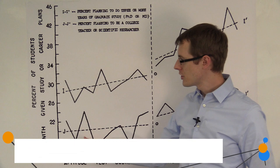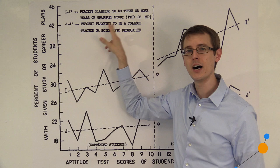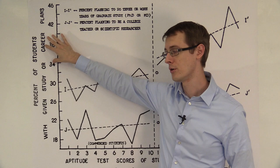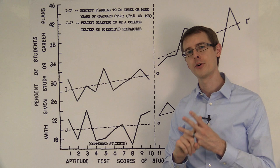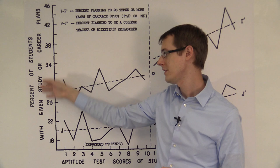So on the vertical axis, we have the percentage of students who either plan to go on to graduate study, that is these two lines up here, or who are planning to be a college teacher or a scientific researcher, that's these two lines down here. So remember, we've always got three variables for an RDD analysis: our running variable, our treatment variable whether you've got a certificate of merit or not, and then our outcome variable that's on this vertical axis.